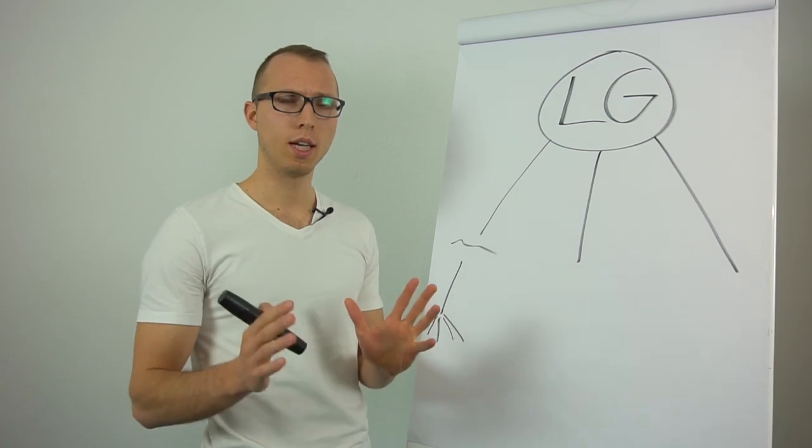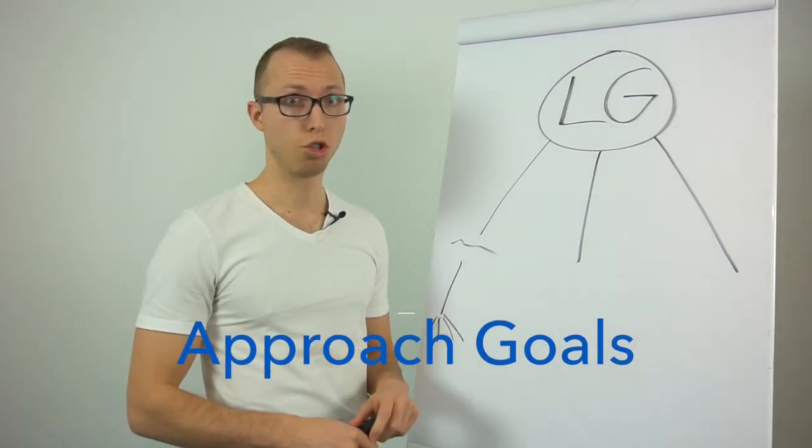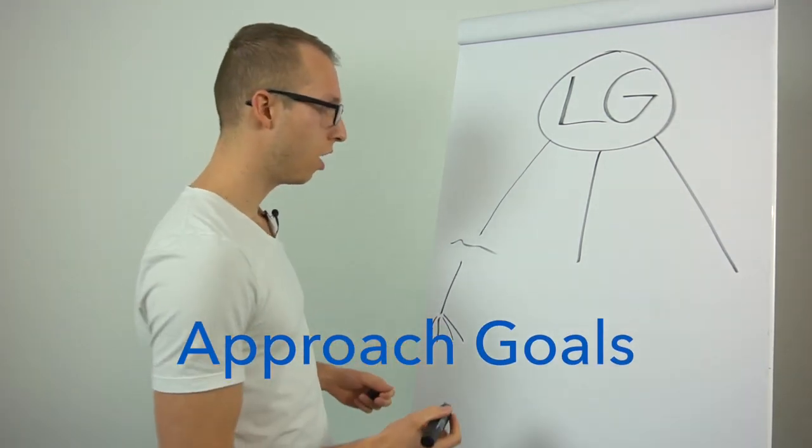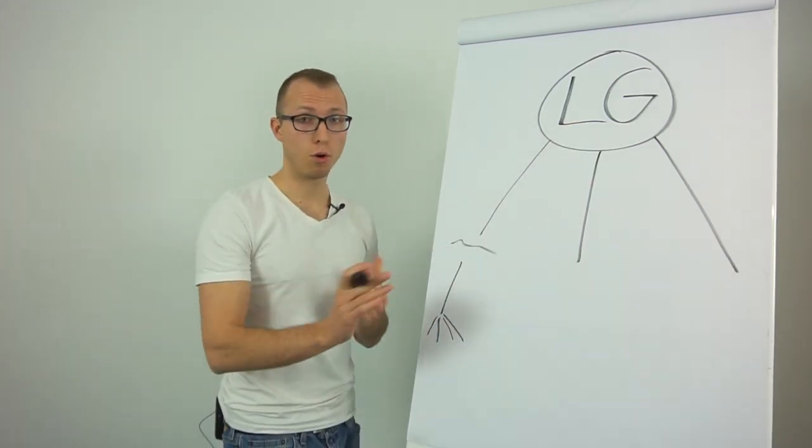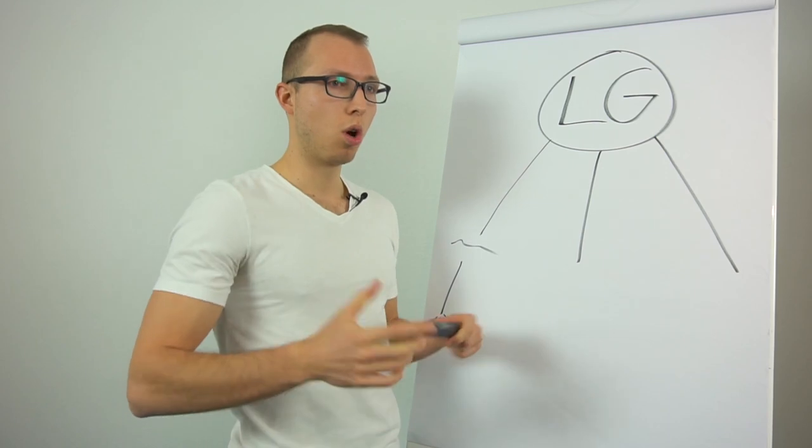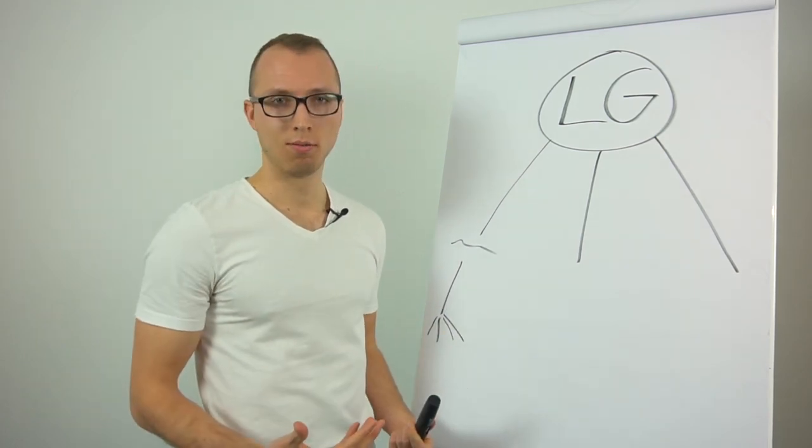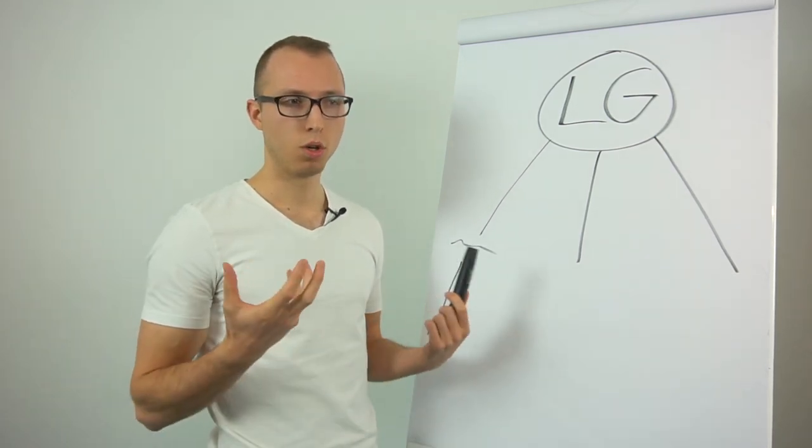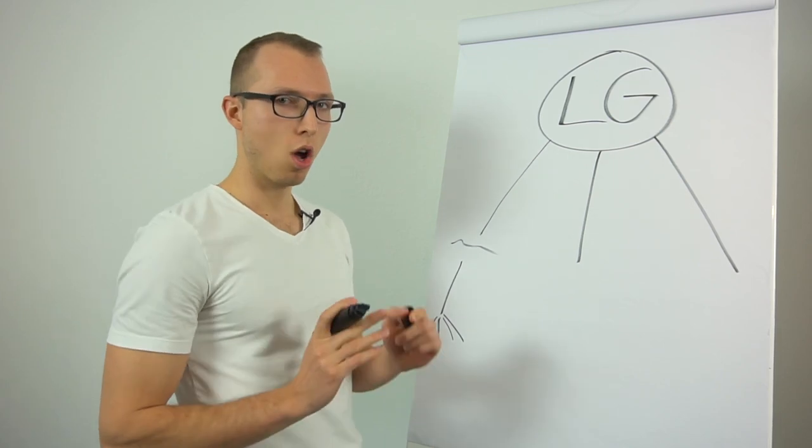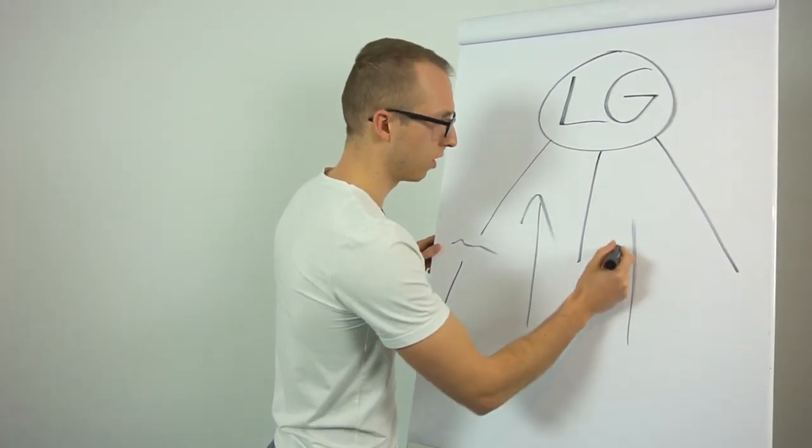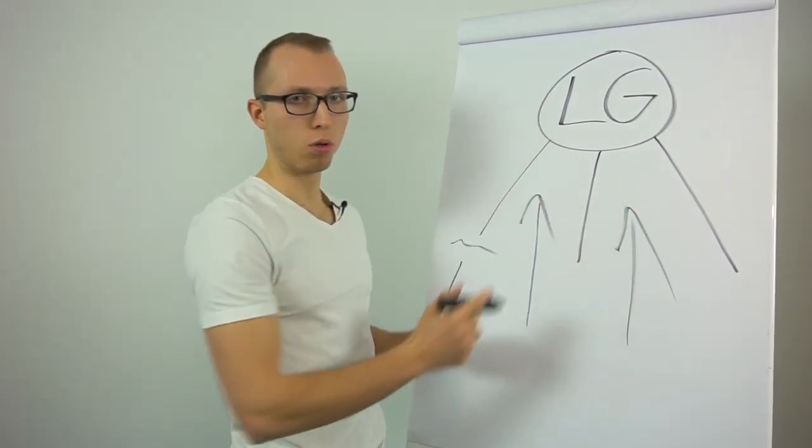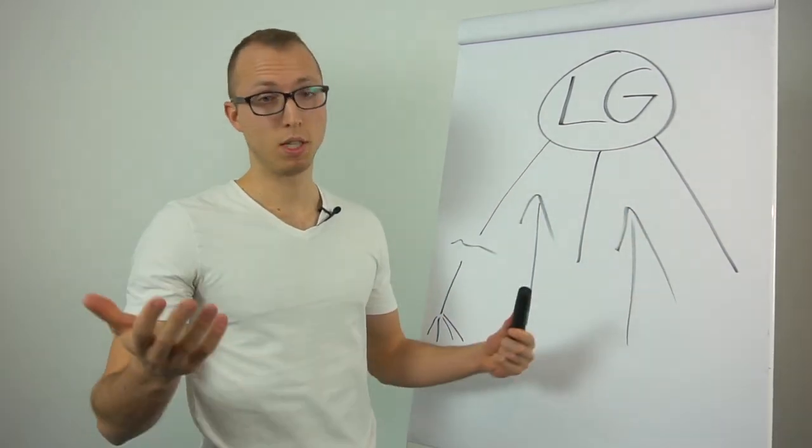Third point is setting approach goals in general. Whatever you're doing usually it's better to approach something and not set avoidance goals. Avoidance goals would be I don't want to be overweight. Well that you don't really know what to do right? You want to focus on what you want to reach. So set approach goals. Basic point.